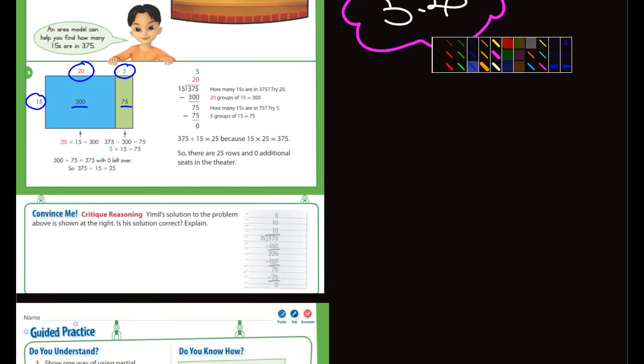What page is this? This is page 194. That convinced me. Let's see here. It says Yimel's solution to the problem is shown above here. So that's his solution. He's coming up with the same thing up above here. He's got zero remainder and looks like it's going to be 25. So is his answer correct? Yes. Explain.